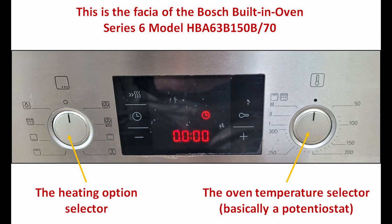Here is a picture of the front face of the Bosch oven. On the left is the heating option selector — this presses and comes out and from here you can select the type of element or heating you want. On the right hand side is the temperature selector, which is basically a potentiometer. At the moment the oven is showing just the time, and this was before the oven was tripping. The problem I believed was in the heating option selector, and behind that lies the PCB.